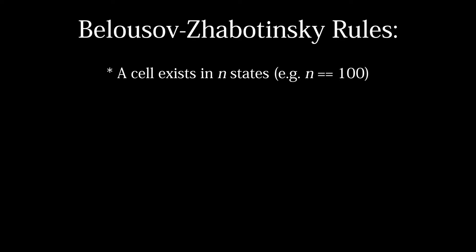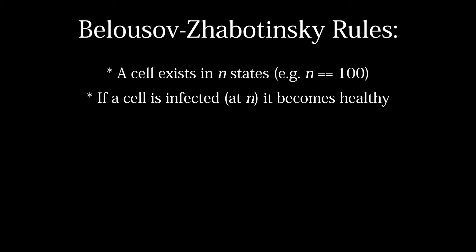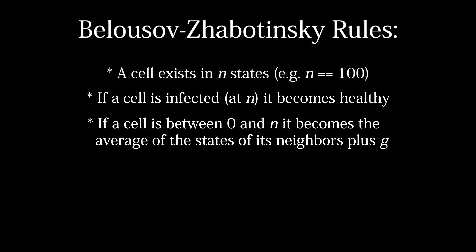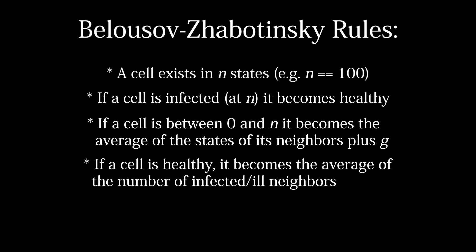In chemistry, cellular automata have been used to model the Belousov-Zhabotinsky reaction, which looks really striking. Niall Red has a cool video on it which you should definitely watch. I've implemented this cellular automaton myself and it looks really cool. The rules: a cell exists in N states representing how infected it is — for example, 0 is healthy and 100 is completely infected. If a cell is completely infected it becomes healthy again. If a cell is between 0 and N, it becomes the average of its neighbors' values plus a constant G, where G is the rate at which the infection spreads. If a cell is healthy, it becomes a weighted average of the number of infected and ill neighbors. I do have to give an epilepsy warning as it flashes a lot, so please skip ahead to the time shown if that's a concern.